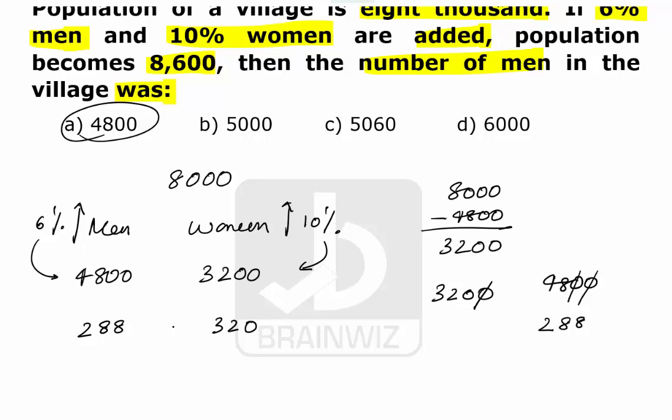If you just try to see here that the number of men are 288 and the number of women are 320. Overall the population have been hiked by 608.